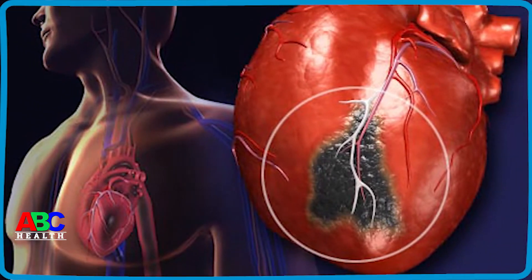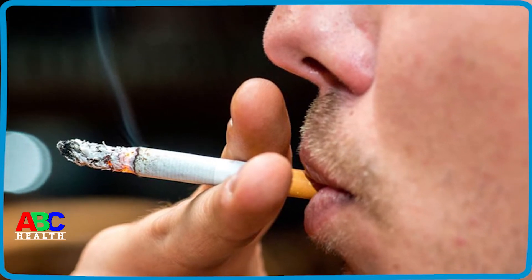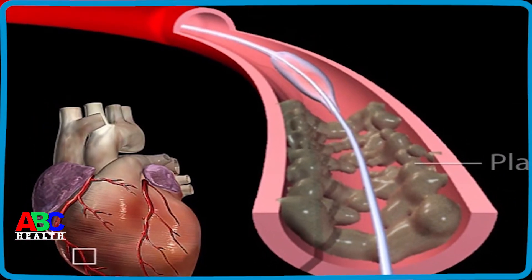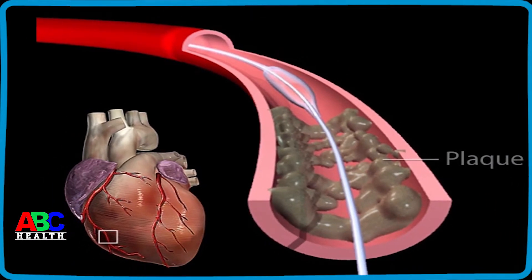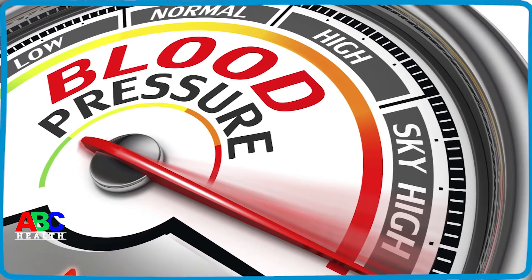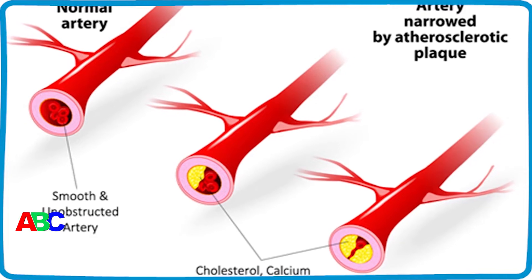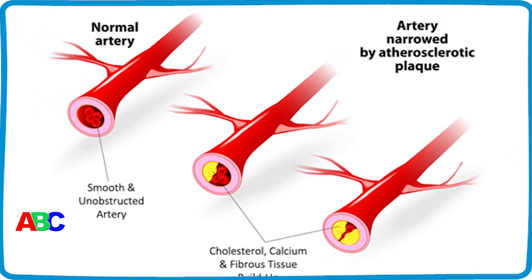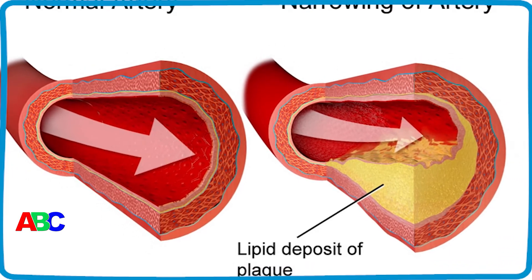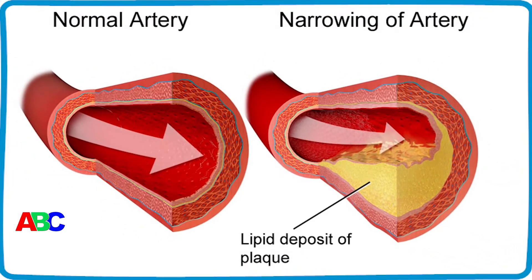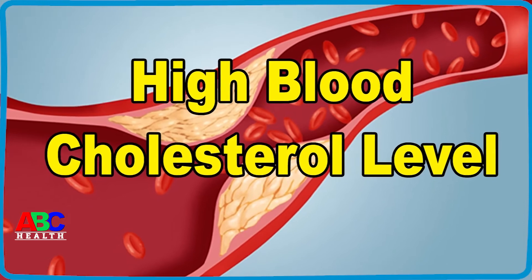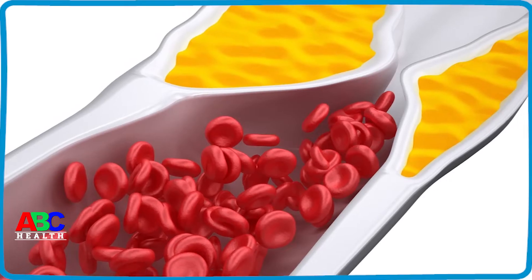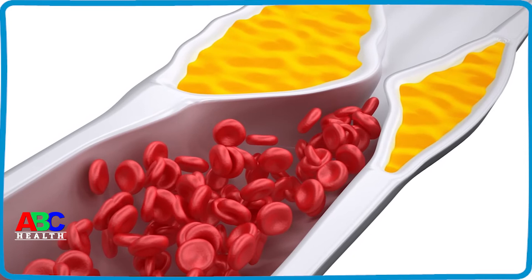High blood pressure is another key risk factor. Uncontrolled high blood pressure can result in hardening and thickening of your arteries, narrowing the channel through which blood can flow.